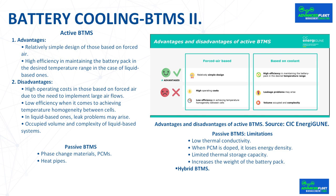Active BTMS: nowadays, active BTMS based on forced air or coolant liquids are the most used in electric vehicles. For example, both Toyota and Lexus use fans that circulate cool air through the battery cells. Tesla and Audi use channels in direct contact with the cells through which a cooling fluid circulates, commonly a mixture of water and ethylene glycol. When coolant liquids are used, they can be in direct contact with the cells, immersed in the fluid, or circulate inside ducts and act indirectly.